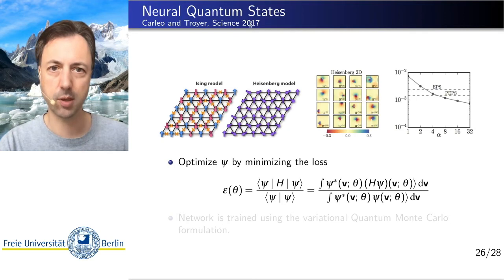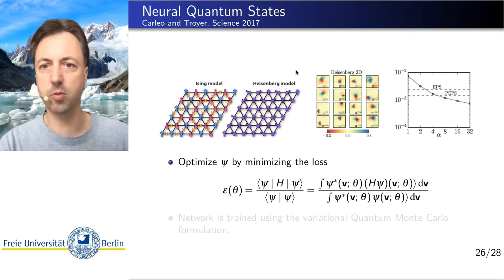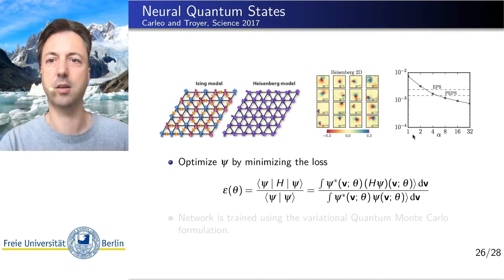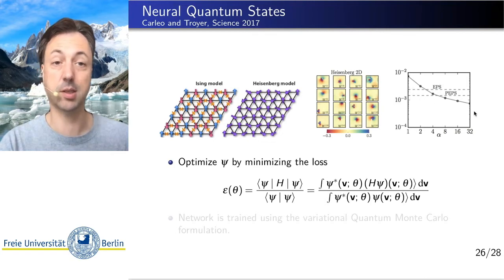Carleo and Troyer showed that with this approach you can get state-of-the-art results, improving over existing state-of-the-art quantum mechanical methods for some standard quantum lattice systems.